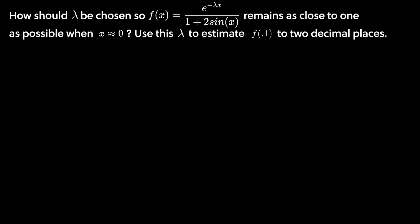We've been learning a ton about linear and quadratic approximations, and this problem is going to combine everything we've learned so far. How should lambda be chosen so that the function f(x) = e^(−λx) / (1 + 2sin(x)) remains as close to 1 as possible when x is near zero? Once you find this lambda value, use it to estimate the function at x = 1/10 to two decimal places.